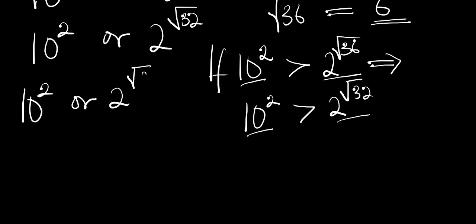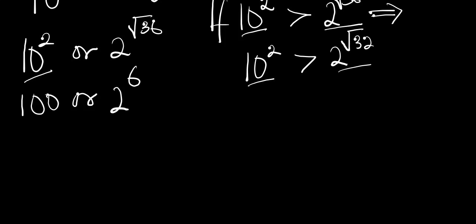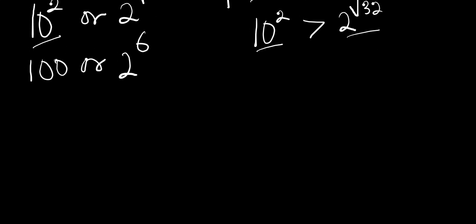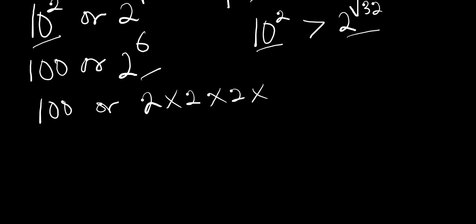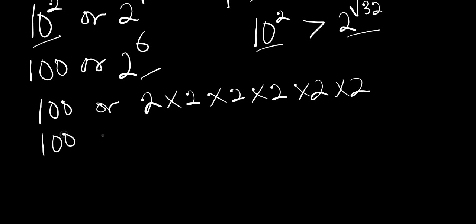10^2 is simply 10 × 10 = 100, and 2^(√36) = 2^6. Computing 2^6: 2×2=4, ×2=8, ×2=16, ×2=32, ×2=64. So we have 100 versus 64.